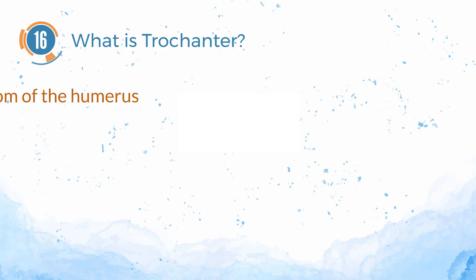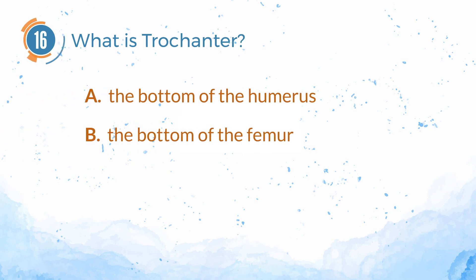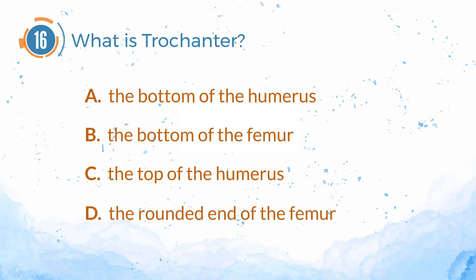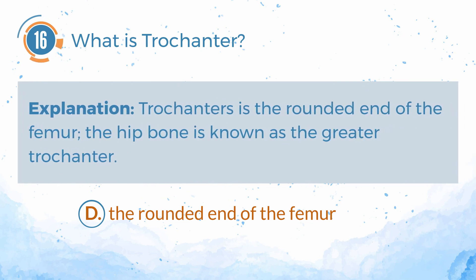Number 16. What is a trochanter? A. The bottom of the humerus. B. The bottom of the femur. C. The top of the humerus. D. The rounded end of the femur. The answer is D — the rounded end of the femur. A trochanter is the rounded end of the femur. The hip bone is known as the greater trochanter.